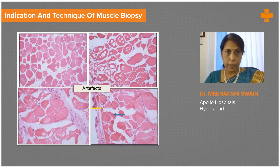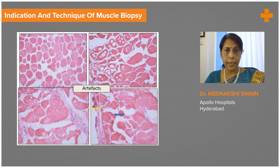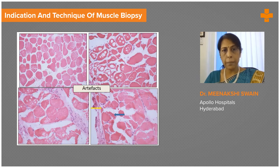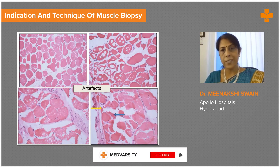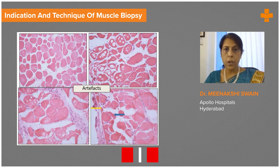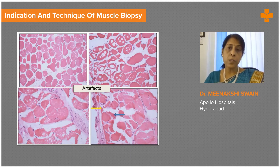If care is not taken, artifacts can make diagnosis very difficult for the reporting pathologist. When a sample arrives floating in saline, the saline insinuates itself between the muscle fibers, making the fibers look rounded and very abnormal. Alternatively, saline may enter the muscle fiber itself, and due to snap freezing, ice crystals form — this ice crystal artifact produces holes in the muscle fibers, which could be confused with vacuolar myopathies seen in storage disorders. One really needs to be extremely careful while freezing muscle.